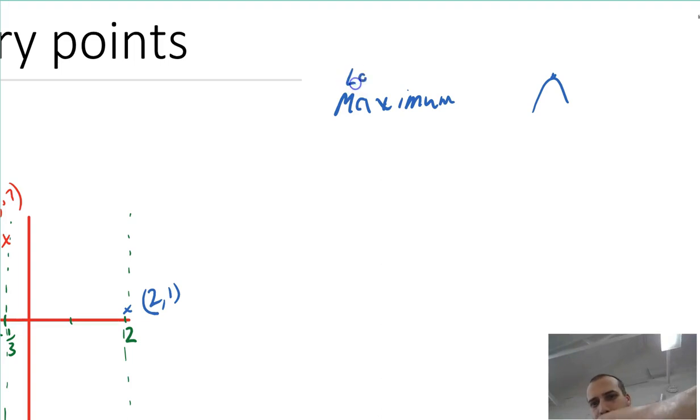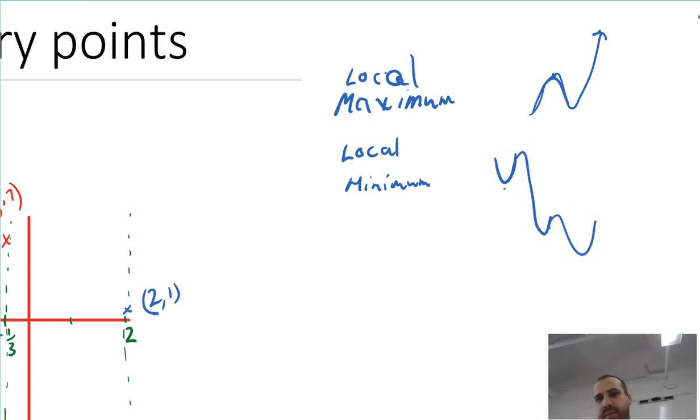I'll call it a local maximum because it might be that here's my function and it gets higher later on. So it's like a hill, but there might be other hills around the place as well. Our stationary point might also be a local minimum, and that's sort of like finding yourself in a valley. It's a local minimum because there might be other valleys elsewhere, but that's just the local valley that you're stuck in.